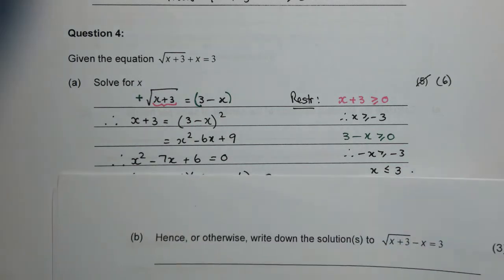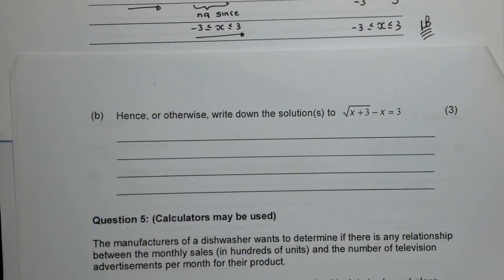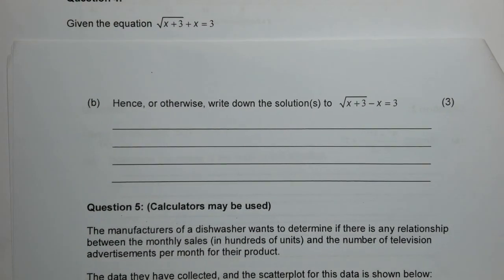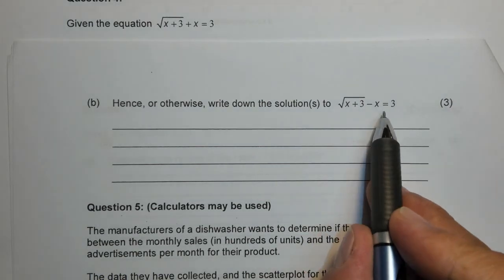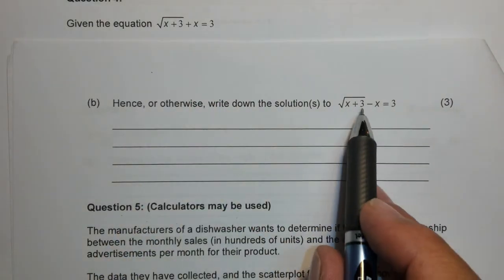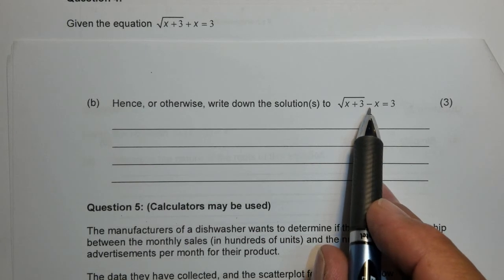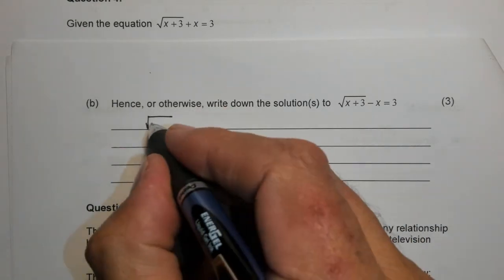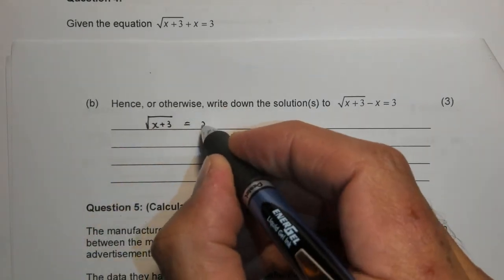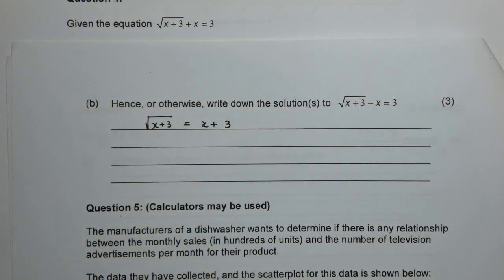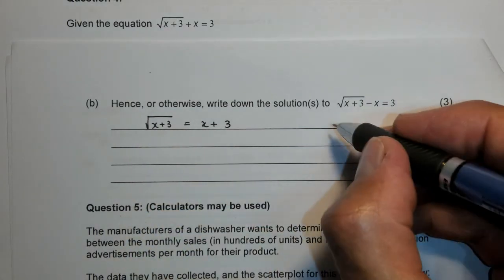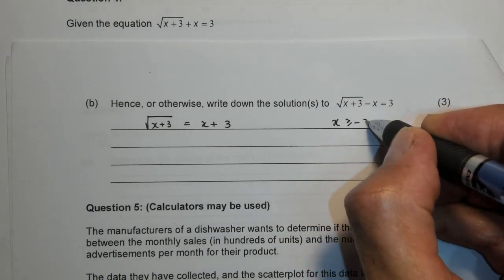The last algebra component is an extension of this particular sum. Part b says hence or otherwise solve this equation. Now we can see that is a plus and this is a minus. If I look at this restriction I get this into the form I want it in. x plus 3, then I get x plus 3 is equal to x plus 3. Now that seems almost true always but remember here we have a root. So my restriction is still x bigger and equal to negative 3, positive on this side and underneath.